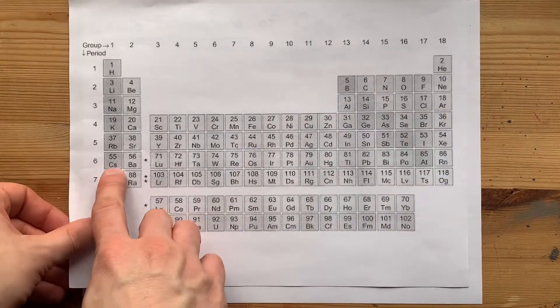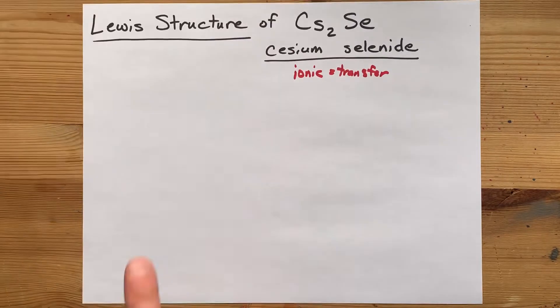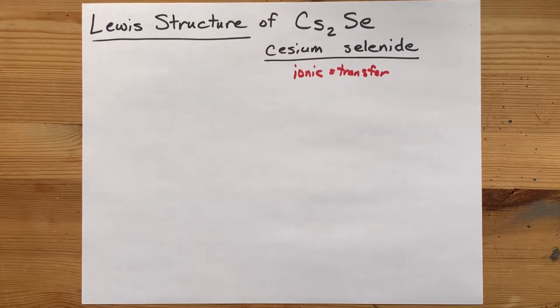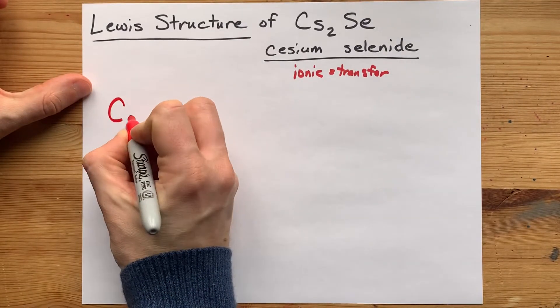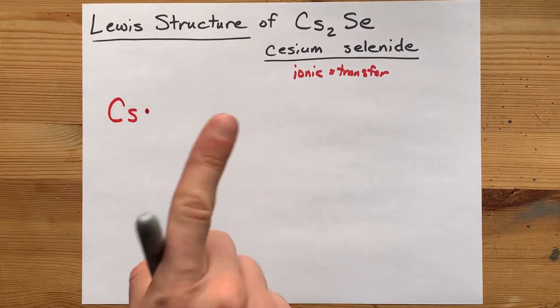Now, cesium is in group one, so I want you to draw the symbol Cs with a single dot around it. Cs with one valence electron.